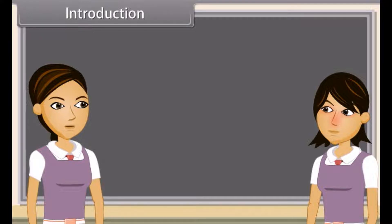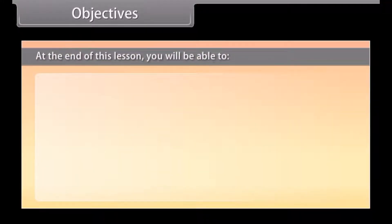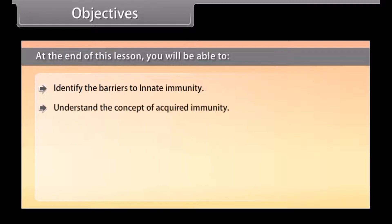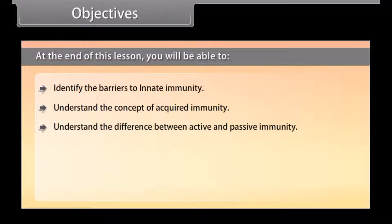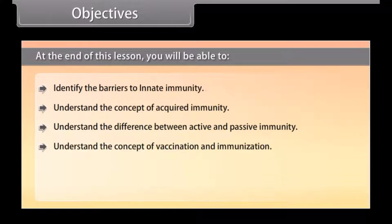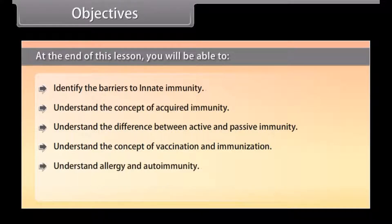Let me explain what immunity is and how it fights against infections. At the end of this lesson, you'll be able to: identify the barriers to innate immunity, understand the concept of acquired immunity, understand the difference between active and passive immunity, understand the concept of vaccination and immunization, understand allergy and autoimmunity, and identify the immune system of the human body.